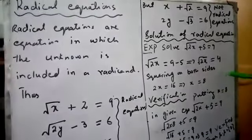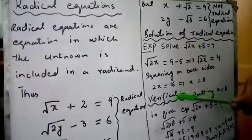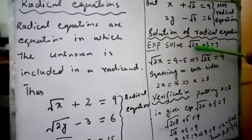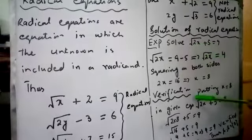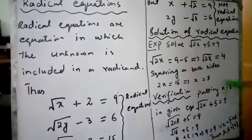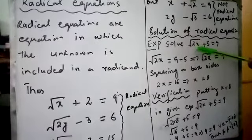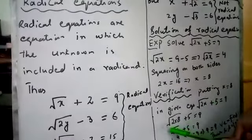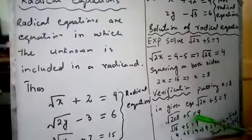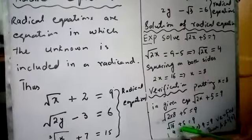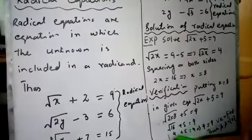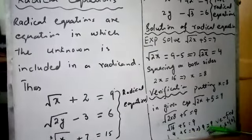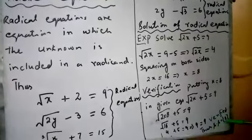Now, most important thing for radical equation solution, we must verify. Means we have to verify this value of x for the given question whether it satisfies or not. So, putting x equals 8 in given equation square root 2x plus 5 equals 9. For x, we will put 8. We will get square root 2 into 8 plus 5 equals 9 which gives square root 16 plus 5 equals 9 which gives 4 plus 5 equals 9 implies 9 equals 9. That is true. So it is verified. The solution set is 8.